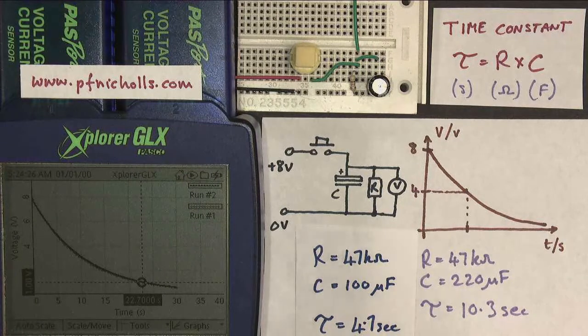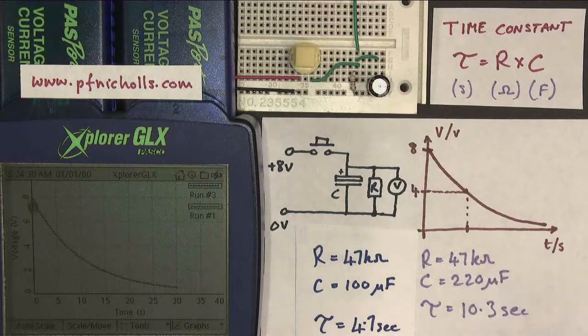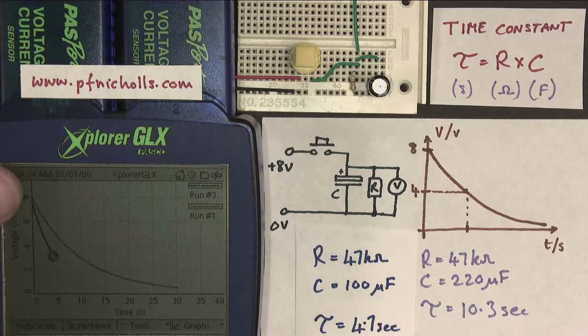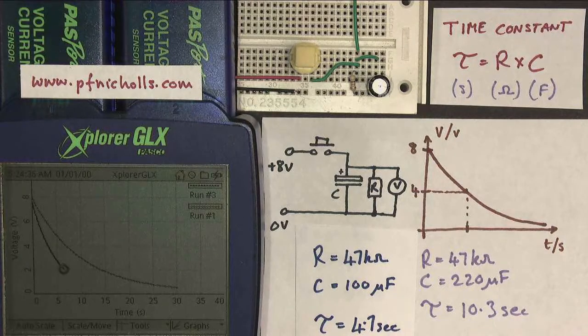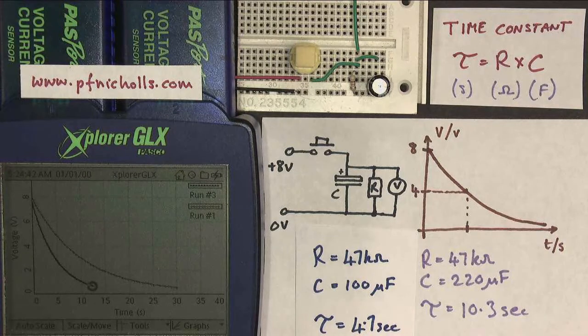What should the graph look like? Well, let's have a look. Charge it up and go. And what you can see is it starts from the same voltage, starts from 8 volts, but it falls away very much faster. So a short time constant means that your capacitor resistor combination is going to discharge quickly.